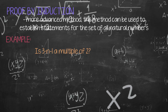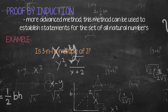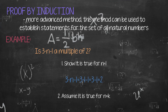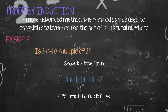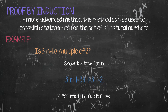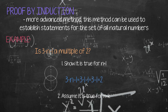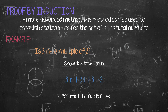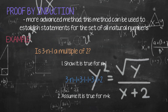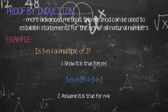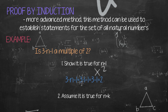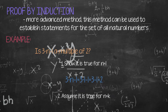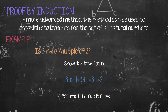Let's find out if the statement is true by doing these steps. Step 1: show it is true for n equals 1. So, 3 raised to 1 minus 1 equals 3 minus 1 equals 2. Yes, 2 is a multiple of 2, which means 3 raised to 1 minus 1 is true.